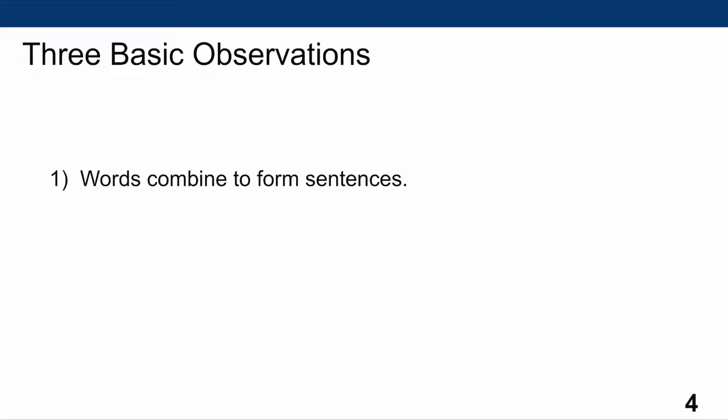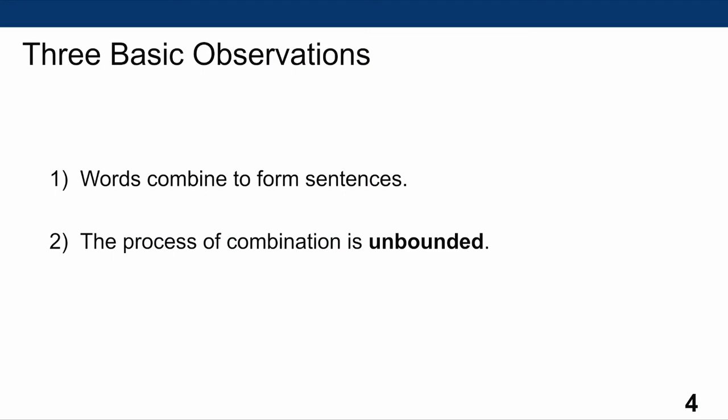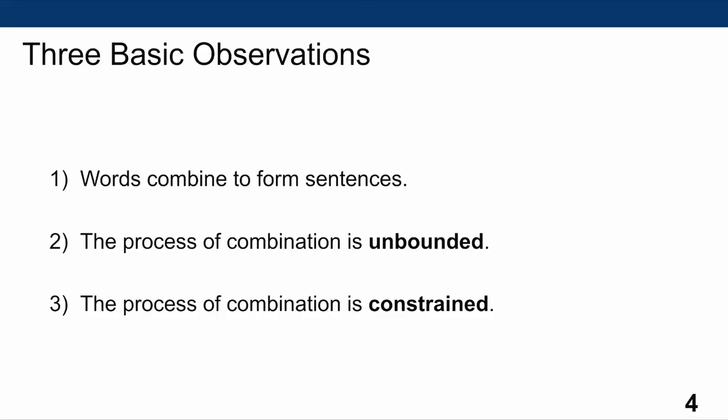Here are three very basic observations that we want to explain with our account of sentence structure. First, we want to explain how and why words combine to form sentences. Second, we want to account for the fact that this process is unbounded — I can form sentences of a potentially infinite length. Third, this process of combining words into sentences is constrained; I can't put words in any random order but must stick to certain rules, with words of different categories going in specific orders and relations to each other.